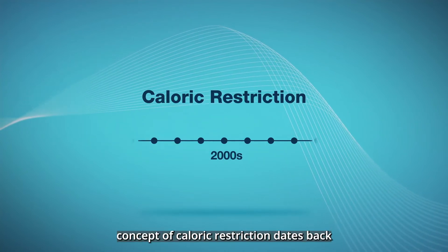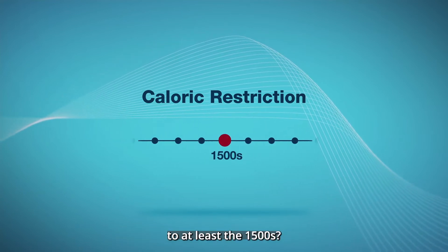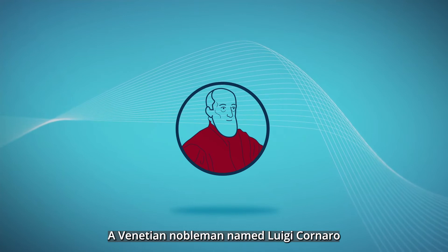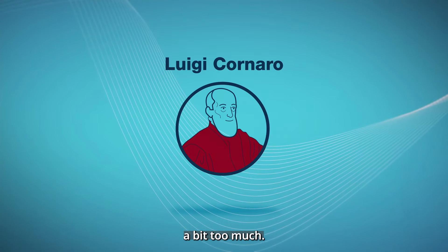Did you know that the concept of caloric restriction dates back to at least the 1500s? A Venetian nobleman named Luigi Cornaro indulged in life's pleasures a bit too much,